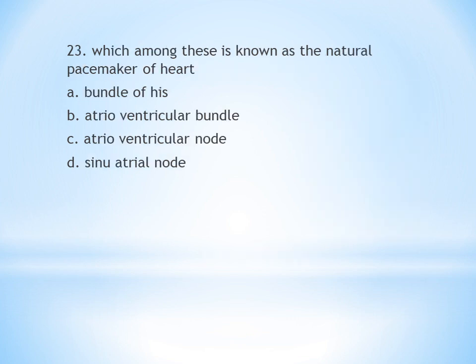Twenty-third question: Which among the following is known as the natural pacemaker of the heart? A. Bundle of His, B. Atrioventricular bundle, C. Atrioventricular node, D. Sinoatrial node. Answer is D — sinoatrial node.